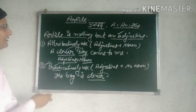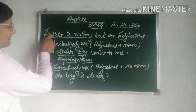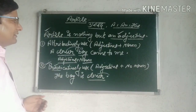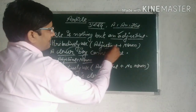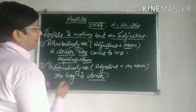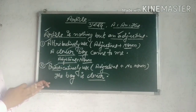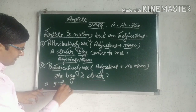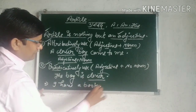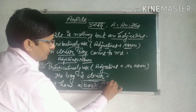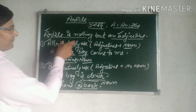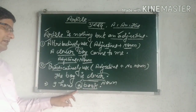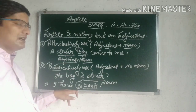Article के बारे में कहा गया कि article is nothing but an adjective — means article's position in the sentence is just like an adjective. Adjective के first attributive use में noun के पहले adjective आता है. Same उसी position को article भी पूरा करता है. Example: 'I have a book.' यहाँ book noun है, और noun के ठीक पहले article 'a' adjective की position hold कर रहा है — article is used before the noun to make the position of noun certain or uncertain.